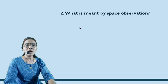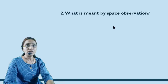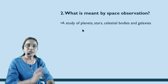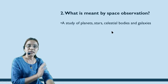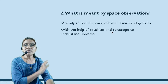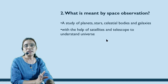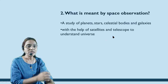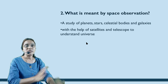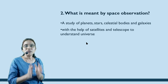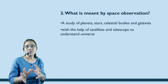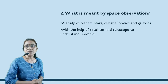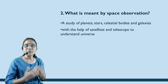The second question is: what is meant by space observation? Space observation is the study of planets, stars, and celestial bodies — including galaxies — with the help of satellites and telescopes. We need to study all the realms of stars using such equipment and satellites to receive and make observations.